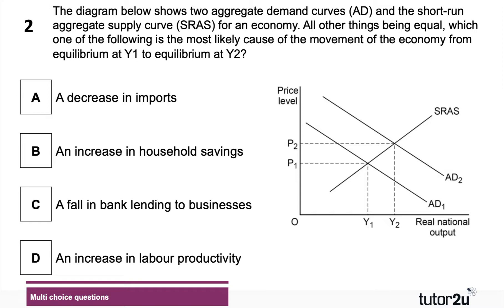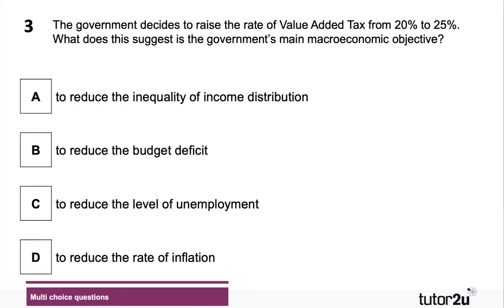AD has shifted out to the right, so we're looking for an option that would increase aggregate demand. D is an increase in aggregate supply; B and C would actually reduce demand in the short term. The answer is A. Aggregate demand is C plus I plus G plus X minus M, so if imports fall, you're subtracting a smaller level of import demand, which has the effect of increasing aggregate demand.